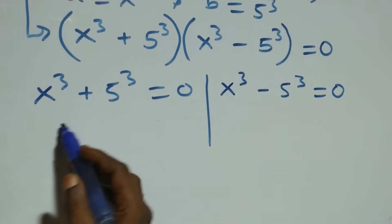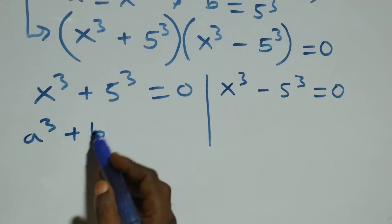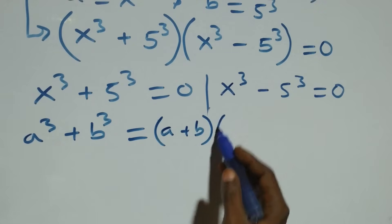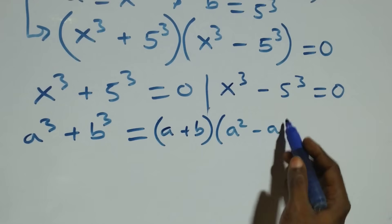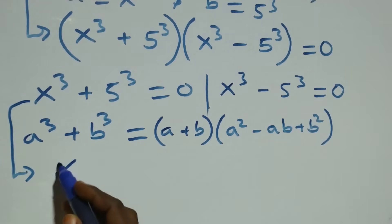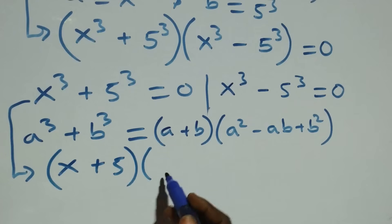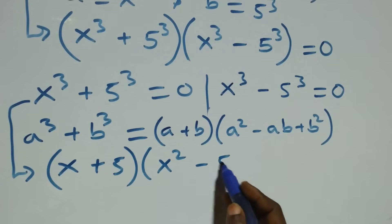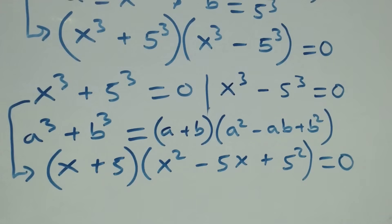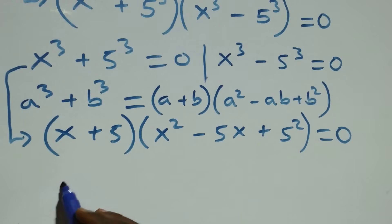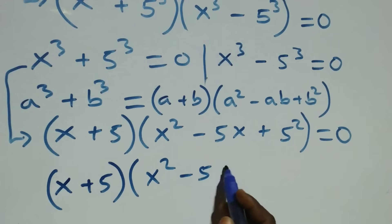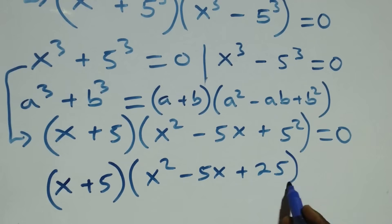Solving this side: this follows the sum of cubes formula, a cubed plus b cubed equals a plus b times open bracket a squared minus ab plus b squared. So this becomes x plus 5, in brackets, times x squared minus 5x plus 5 squared, which is 25, close brackets, equals to 0.